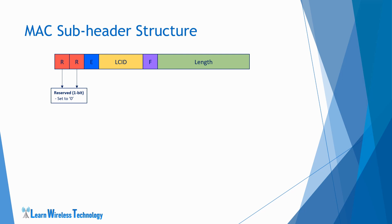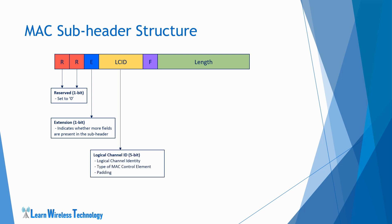R stands for Reserved — its size is 1 bit and it is set to 0, meaning it does not carry any information for the time being. E means Extension, which is 1 bit. It is a flag that indicates whether there are more fields present in the subheader. When set to 1, it indicates at least one more R/E/LCID field follows; when set to 0, it indicates no more R/E/LCID fields and the next byte is the start of the MAC SDU or padding. LCID is the Logical Channel Identity field, which identifies the logical channel instance of the corresponding MAC SDU, the type of MAC control element, or padding. LCID holds a 5-bit value and the value depends on the MAC control element.